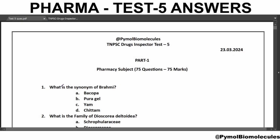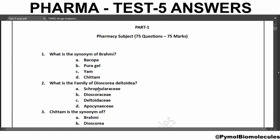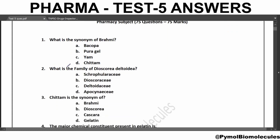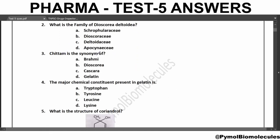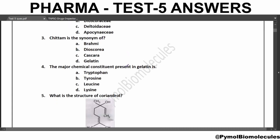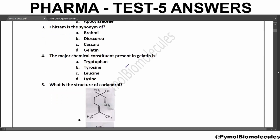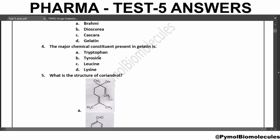The first question: what is the synonym of Brahmi? The answer is Bacopa. What is the family of Dioscorea delta A? The answer is Dioscoreaceae. Chittum is the synonym of Cascara. The major chemical constituent present in gelatin is Lysine.